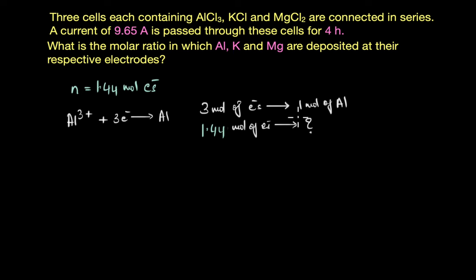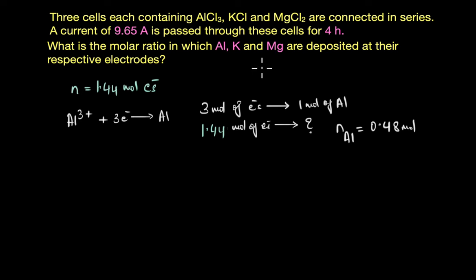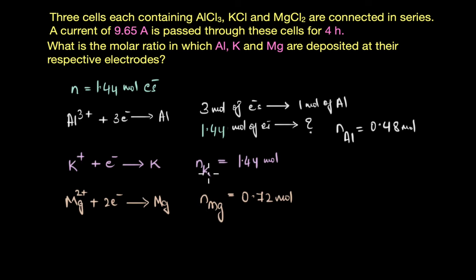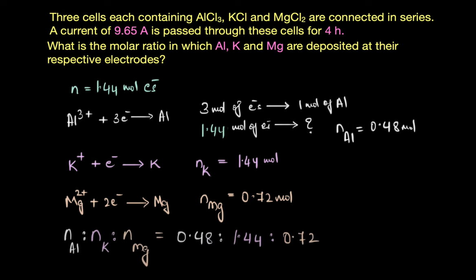Cross multiplication gives 0.48 moles of aluminium deposited. Similarly, writing the half reactions for potassium and magnesium, the number of moles of potassium deposited is 1.44 moles, and the number of moles of magnesium deposited is 0.72 moles.